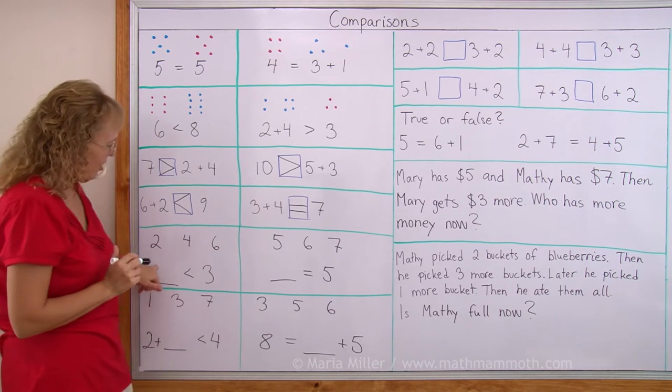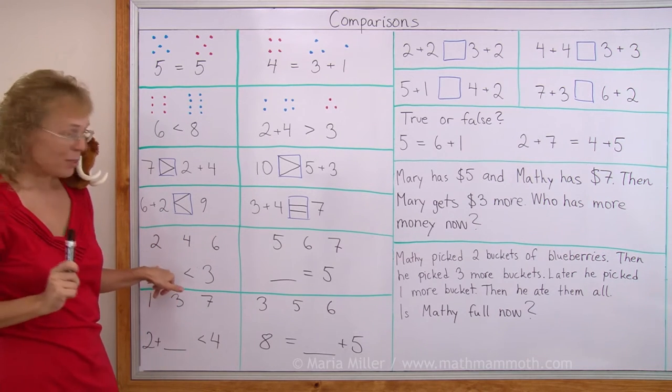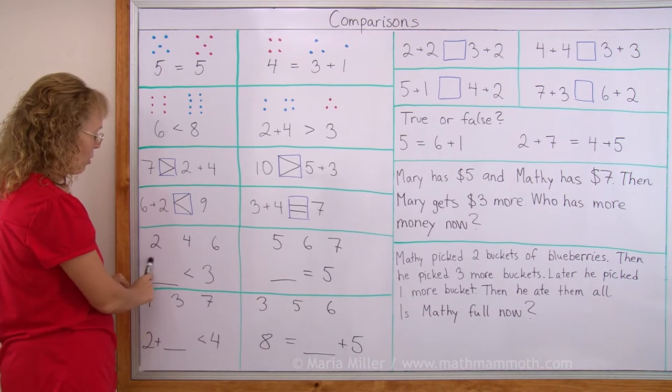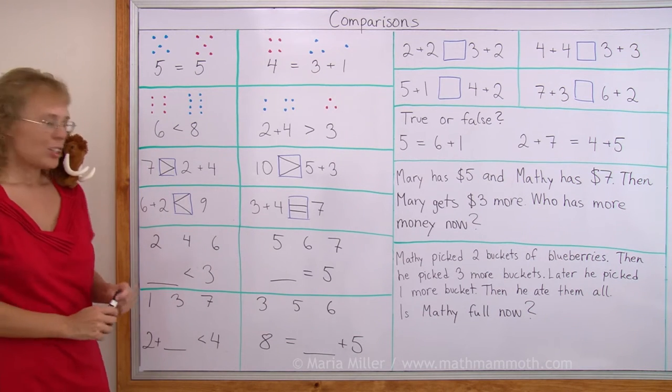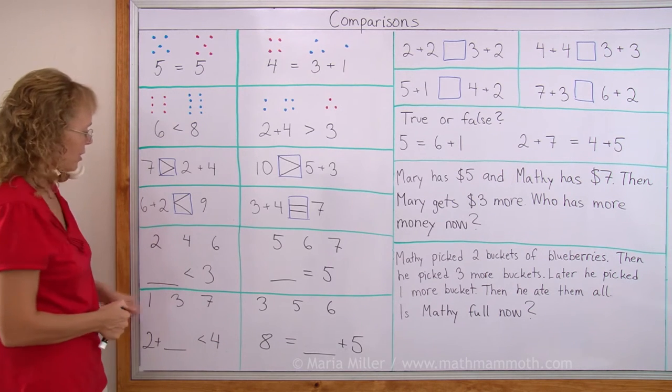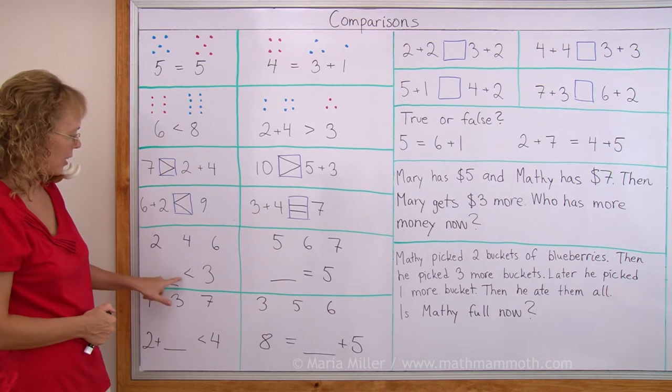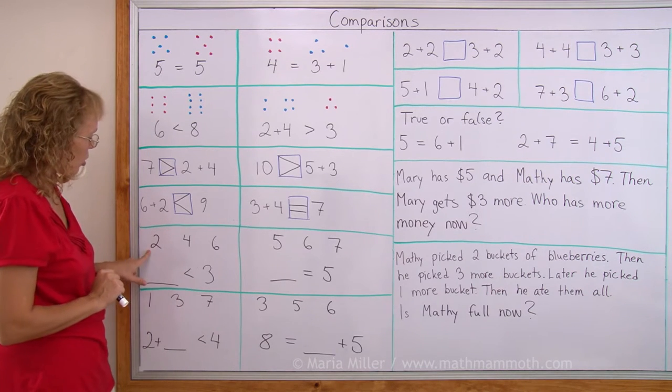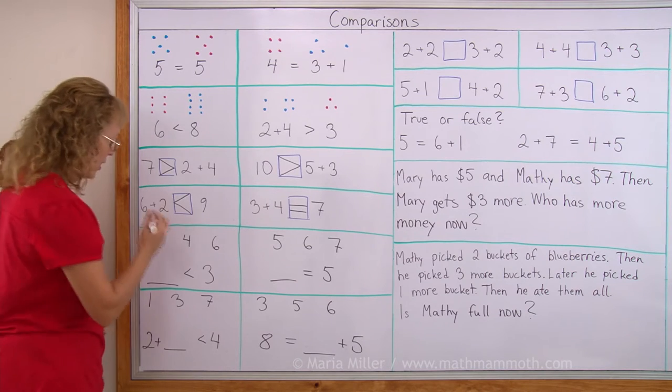Over here, on this empty line goes a number. We need to pick this or this or this number to go on the empty line, so that this comparison here is true. For example, if I try 6 here, 6 less than 3, that's not right. So 6 won't fit. 2. 2 is less than 3. That works.